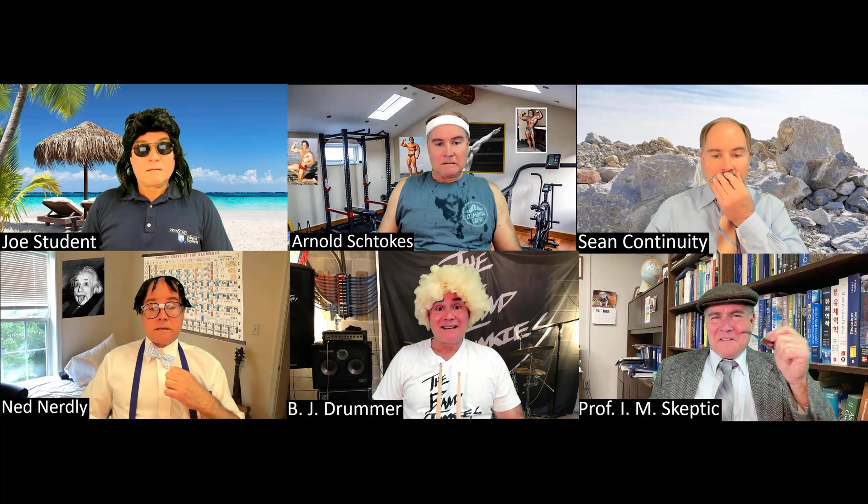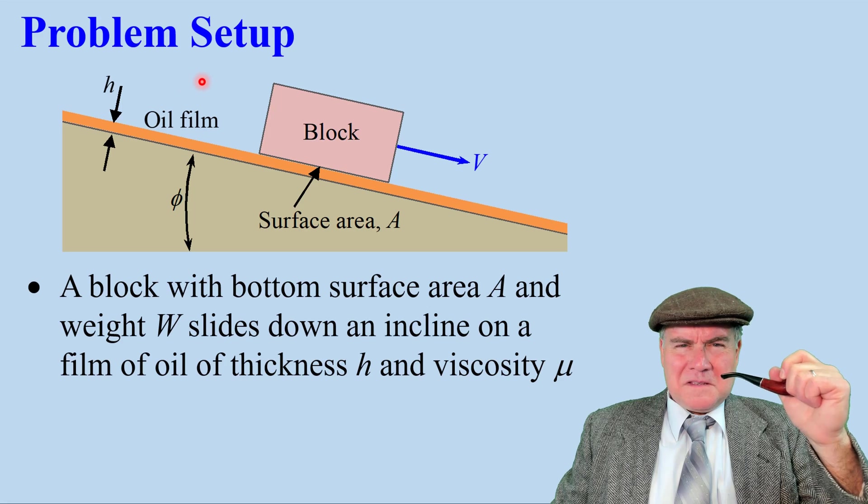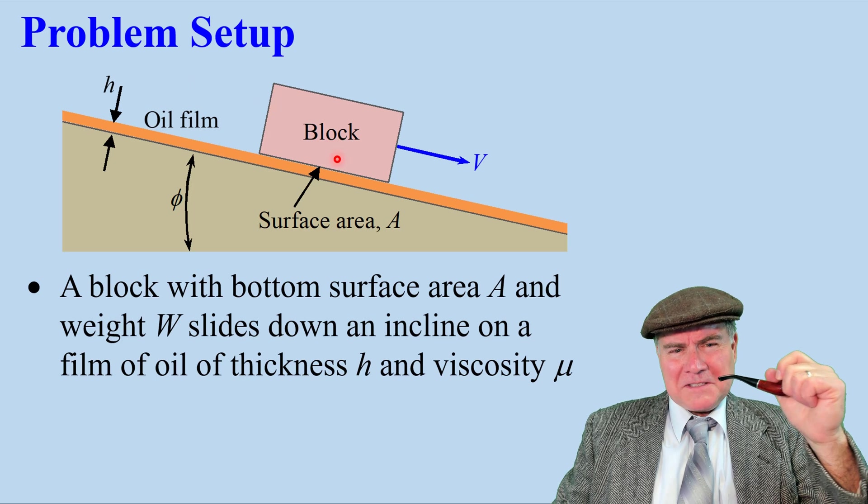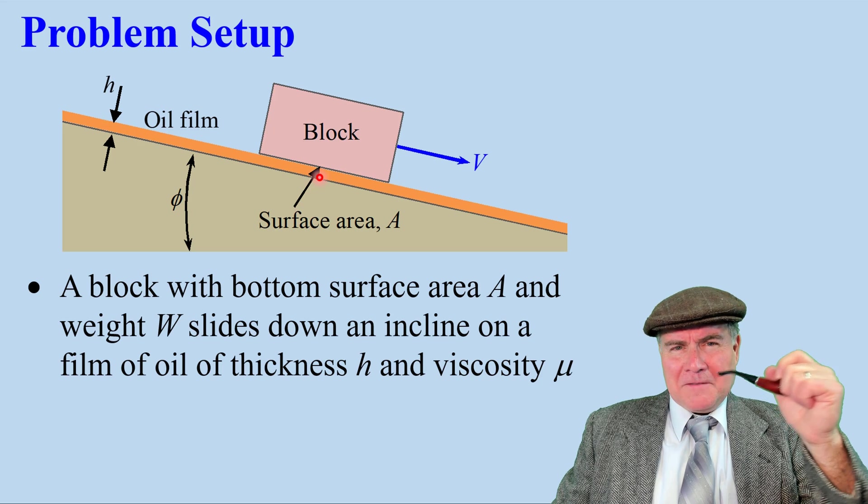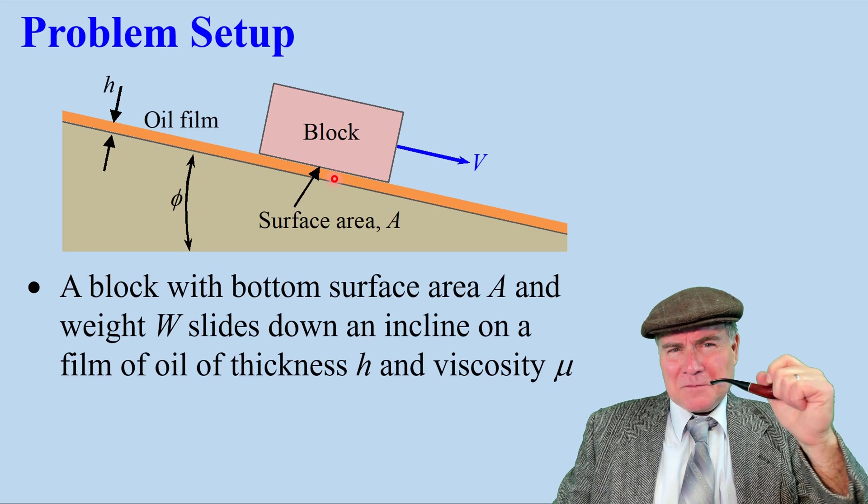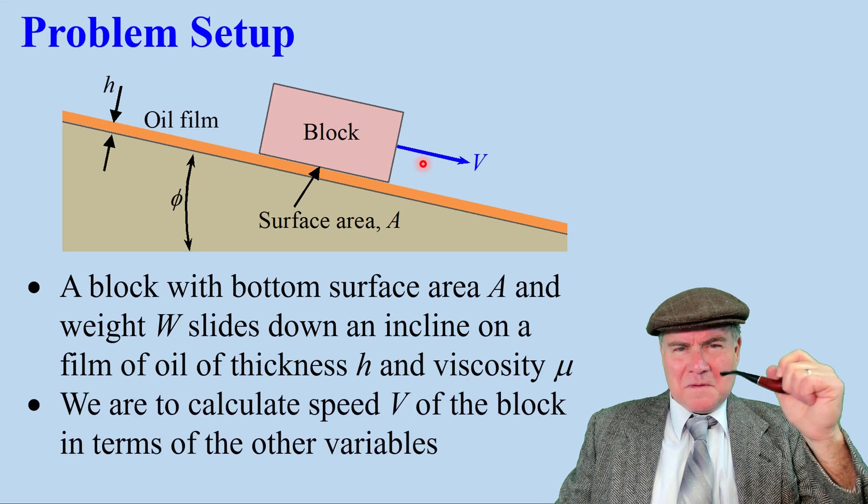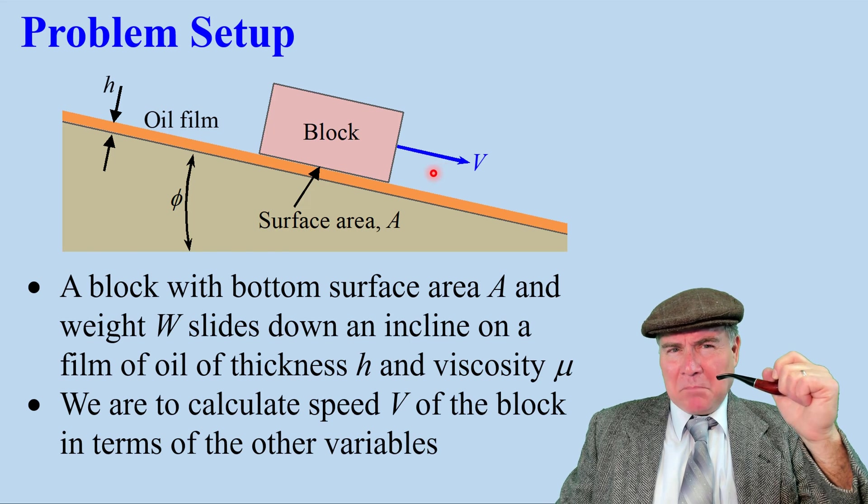I'll share a video about this. Here's the problem setup. We have a block sliding down an incline of angle phi along an oil film of thickness h. The surface area of the bottom of the block is A in contact with the oil. Oil viscosity is mu. We are to calculate the speed v of the block.